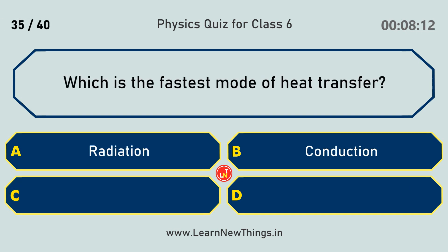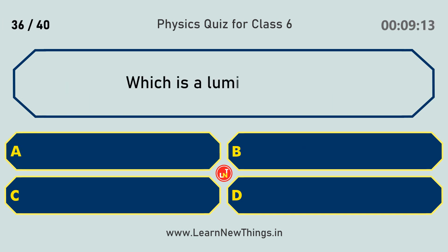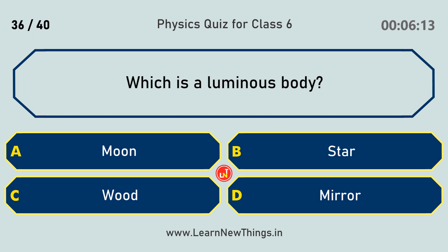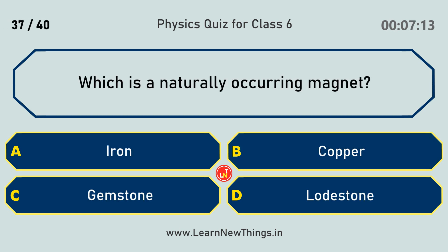Which is the fastest mode of heat transfer? Radiation. Which is a luminous body? Star. Which is a naturally occurring magnet? Lodestone.